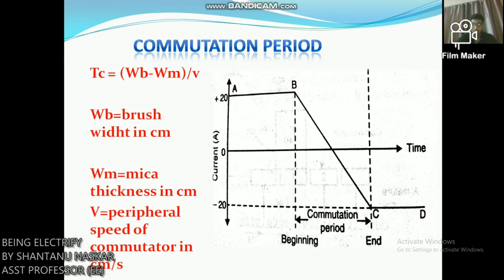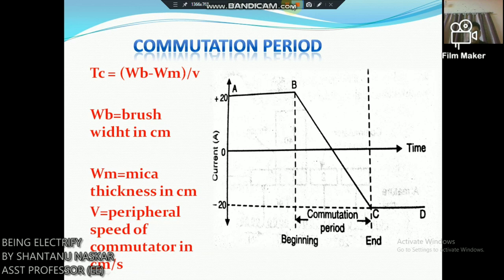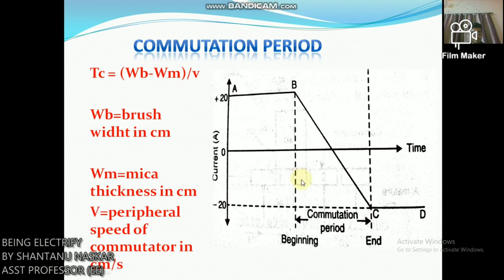This figure shows the current-time graph for coil A undergoing commutation. The horizontal line AB represents a constant current of 20 amperes up to the beginning of commutation. From the finish of commutation it is represented by another horizontal line CD, on the opposite side of the zero line and the same distance from AB — the current has exactly reversed. The way the current changes from B to C depends on the conditions under which the coil undergoes commutation. If the current changes at a uniform rate (a straight line), it is called ideal commutation, and no sparking will take place between the brush and the commutator.